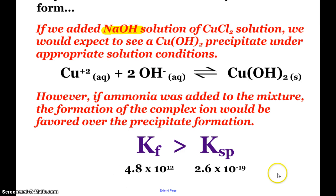You can look at it through the eyes of the K values because we know that the formation of the complex ion is a much higher K value than our Ksp for copper 2 hydroxide. A very slightly soluble salt.